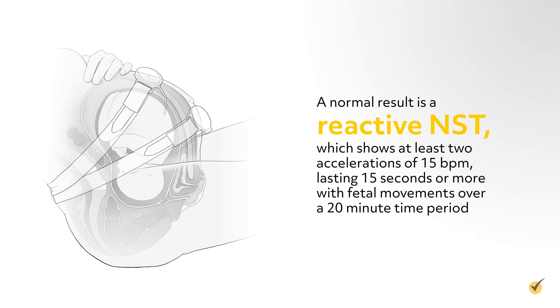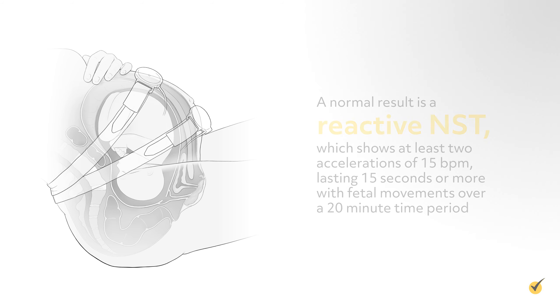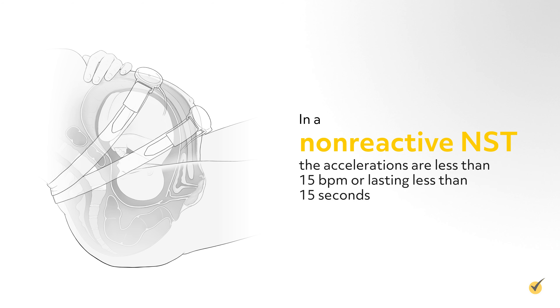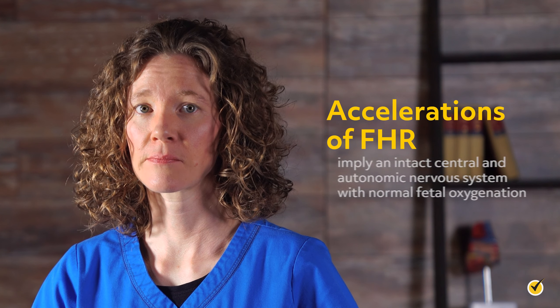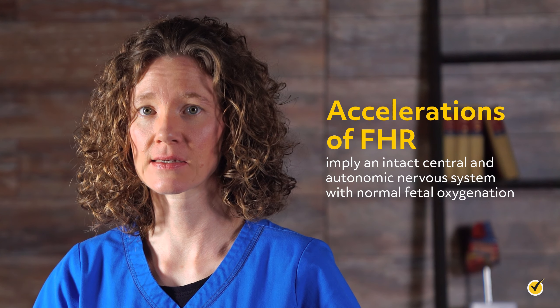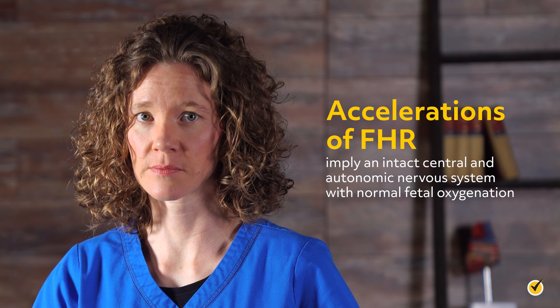Internal monitoring of the fetal heart rate can also be accomplished by using an internal spiral electrode, which is attached to the skin of the fetal head. To insert the spiral electrode, the cervix must be at least 2 cm dilated, the fetal part must be accessible by vaginal exam, and the membranes must be ruptured.